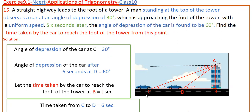So, here if you see this figure, this is a highway and this is a tower. A man stands at the top of the tower and he is seeing the car from here to here at this point. The angle of depression to the first point is 30 degrees. And after 6 seconds, the car is reaching at point D, and the angle of depression from this point to the car is 60 degrees. So here this is 60 degrees and this is 30 degrees.